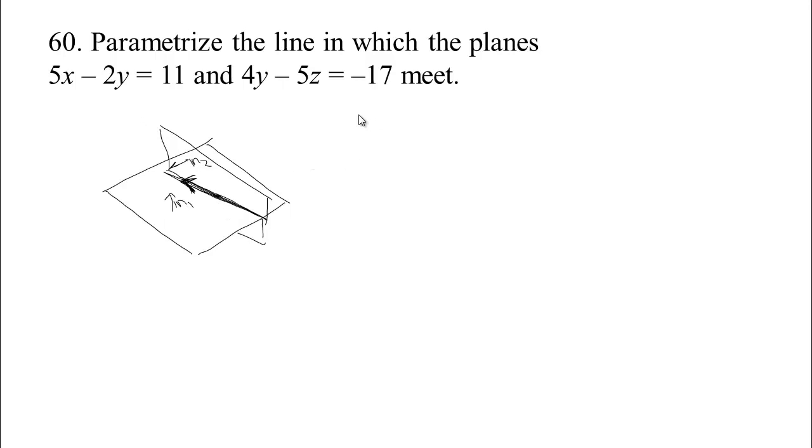So if we read off the normals to these two planes and take their cross product, that would give us a vector that is parallel to the vector we're looking for. So if we read off the first normal, the coefficient of x is 5, the coefficient of y is negative 2, and the coefficient of z is 0. Looking at the second normal, the coefficient of x is 0, the coefficient of y is 4, and the coefficient of z is negative 5. So there's the two normals.